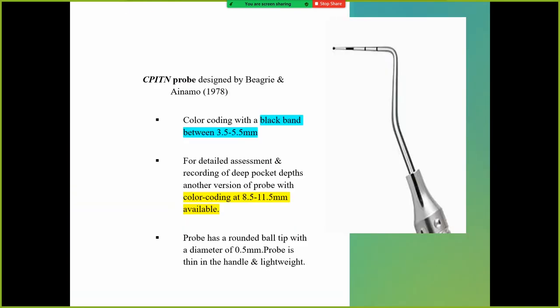CPITN probe: CPITN probe has a black band from 3.5 to 5.5mm. This is a black band from 3.5 to 5.5mm. Then it has color coding at 8.5 - here at 8.5 is color coding, and at 11.5 is color coding. It has a ball here that is 0.5mm.